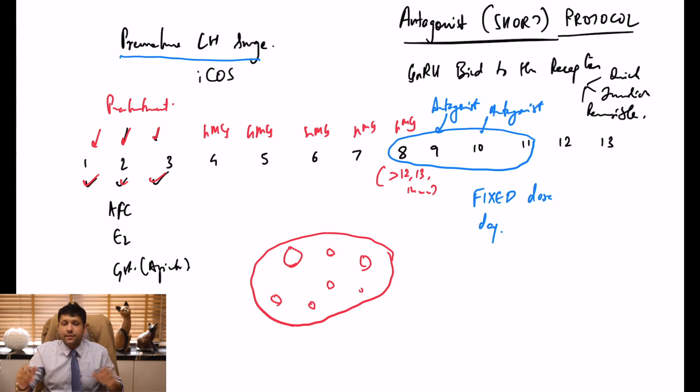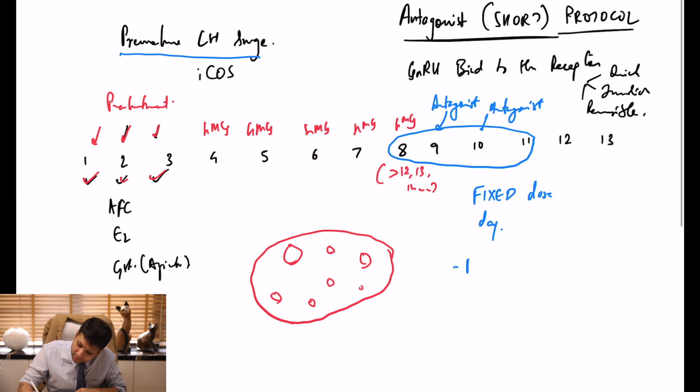This is the standard. The advantage with antagonist is that it can be used for everyone. It can be used for poor responders, hyper responders, patients with severe PCOS, and normal responders.